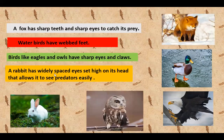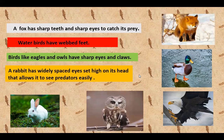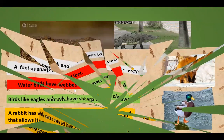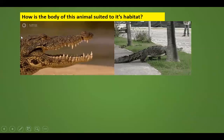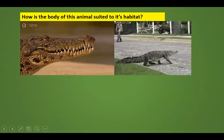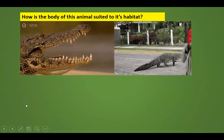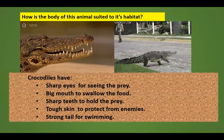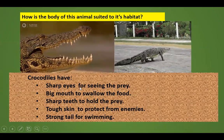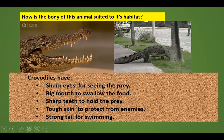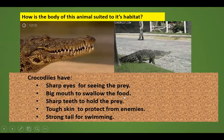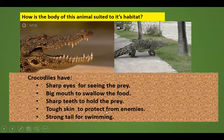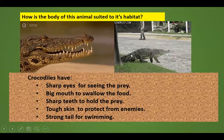A rabbit has widely spaced eyes set high on its head that allow it to see predators easily. How is the body of this animal suited to its habitat? Crocodiles have sharp eyes for seeing prey, a big mouth to swallow food, sharp teeth to hold prey, tough skin to protect from enemies, and a strong tail for swimming.